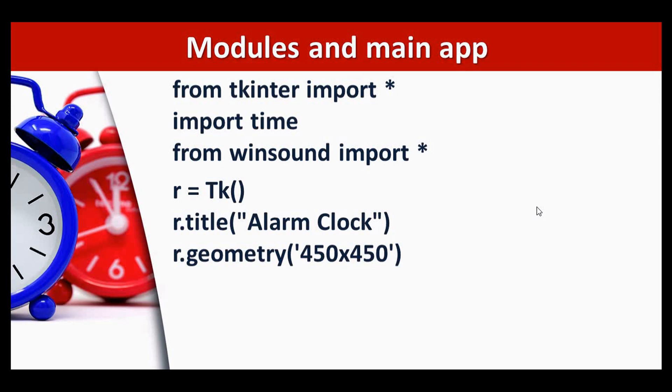Here I have given the width and height as 450 by 450. It is up to you; you can change the width and height. In order to make the root window displayed we need to call this method r.mainloop, and this must be the last line of the program. In between we need to place the class and its corresponding methods.